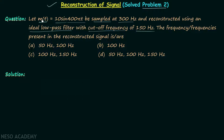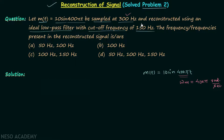The message signal m(t) is equal to 10 sin(400πt). There is only one frequency component: 400π radians per second. Therefore, the maximum frequency component ωm is equal to 400π radians per second. Since the question uses hertz, we calculate fm = ωm / 2π = 400π / 2π = 200 Hz. So fm is equal to 200 Hz.